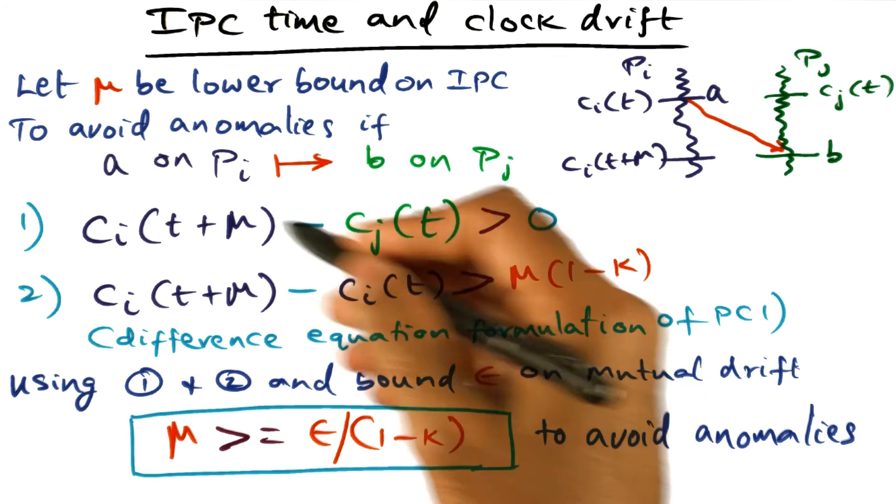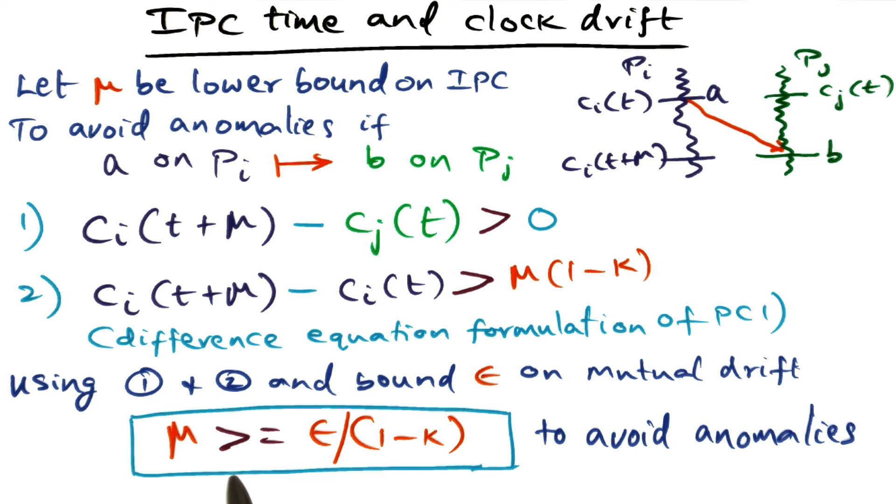And if we put all of these things together, you can derive the expression for inter-process communication time. What it should be relative to mutual drift and individual clock drift. If this inequality is satisfied, you can avoid anomalies in your distributed system.